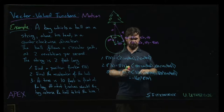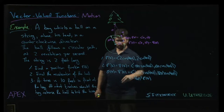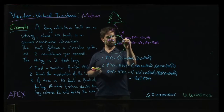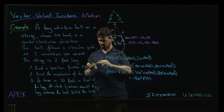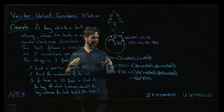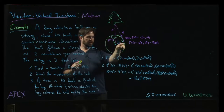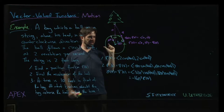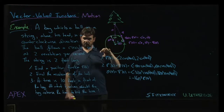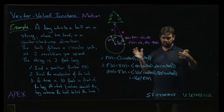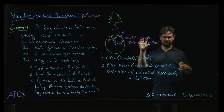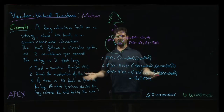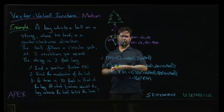One useful observation — pointed out in the textbook — is that we have a right angle to work with here. There's a theorem from the previous section: if you're moving in a circle, if the magnitude of your position vector doesn't change, the position vector is always orthogonal to the velocity vector. This follows from taking the product rule derivative of r·r = |r|²: you get 2r·r' = 0, which must hold because the magnitude is constant.